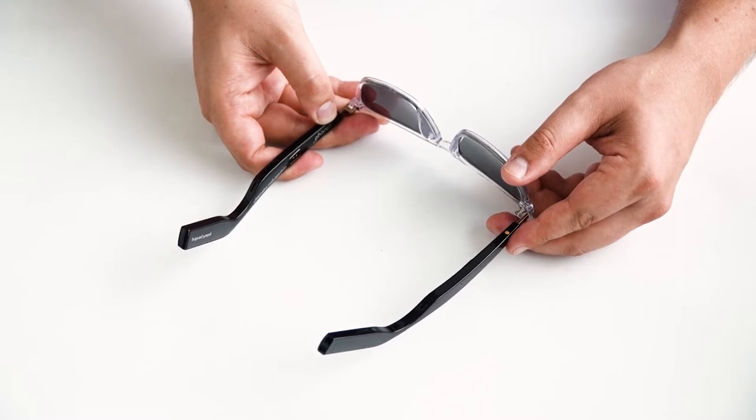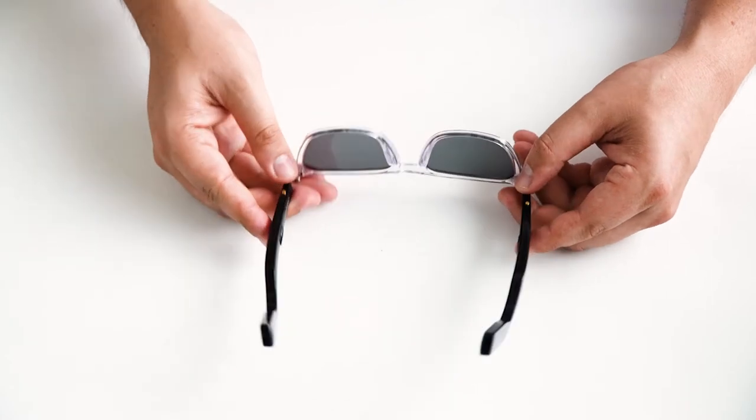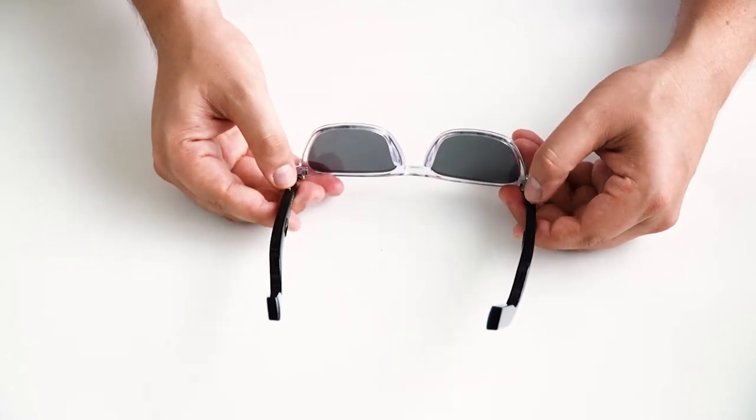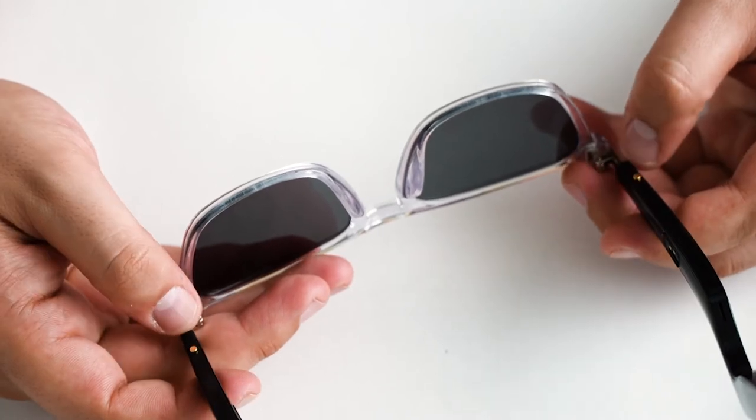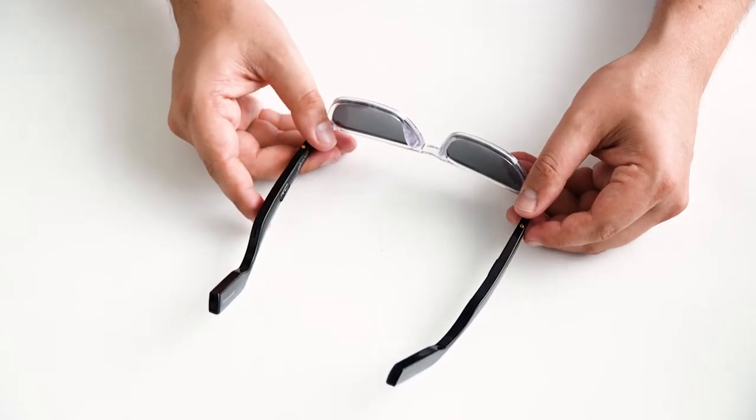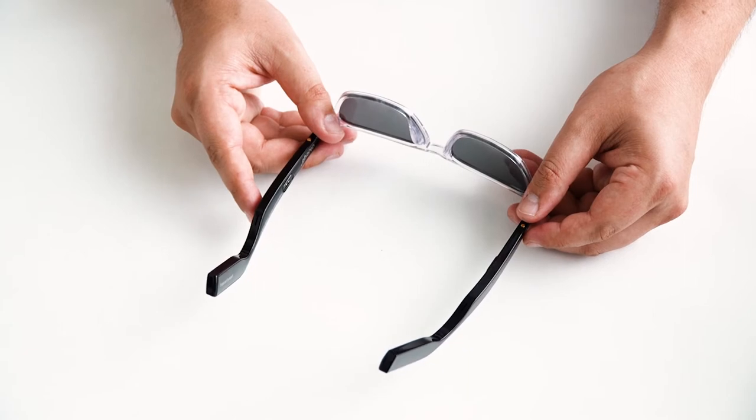To turn the glasses back on without disconnecting them from the cable, hold both touch buttons for about three seconds. You'll hear 'power on' and the glasses will automatically reconnect to the last device you paired them to.